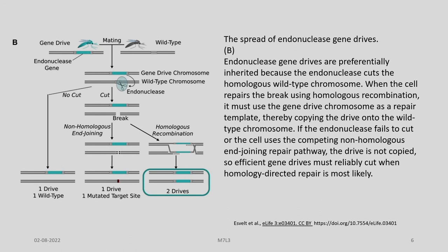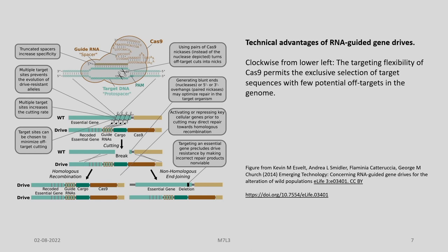The endonuclease gene drives are preferentially inherited because the endonuclease cuts the homologous wild-type chromosome. When the cell repairs the break during homologous recombination, it must use the gene drive chromosome as a repair template, thereby copying the drive onto the wild-type chromosome. If the endonuclease fails to cut or the cell uses the competing NHEJ repair pathway, the drive is not copied. So efficient gene drives must reliably cut when homology-directed repair is most likely to happen.